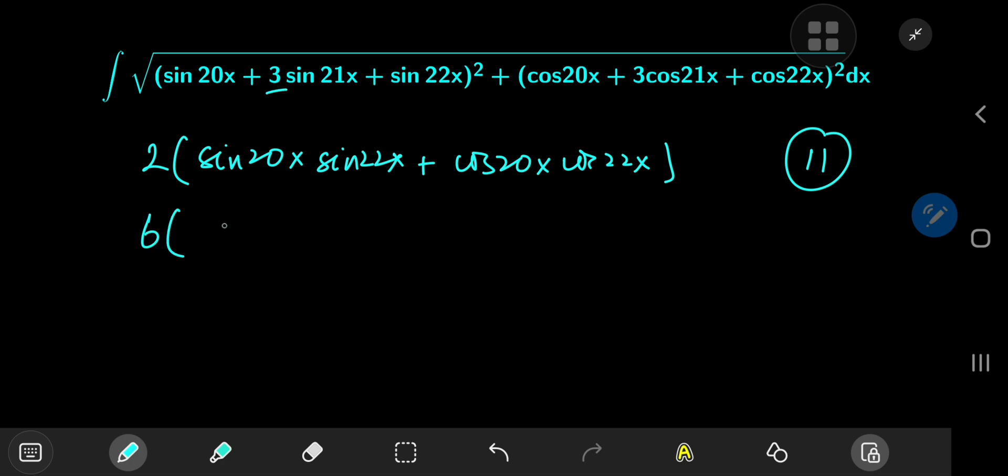As well as a 6 times the sine of 20x times sine 21x plus the cosine of 21x times the cosine of 20x already then.